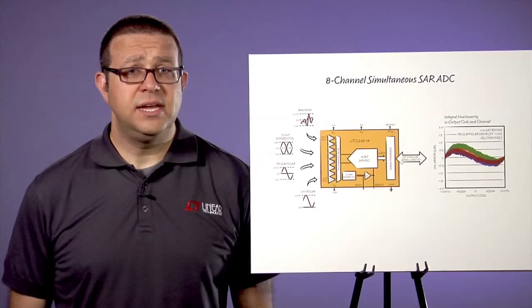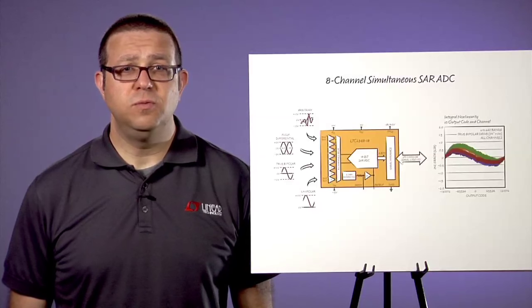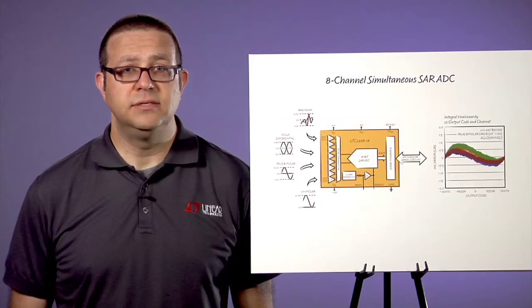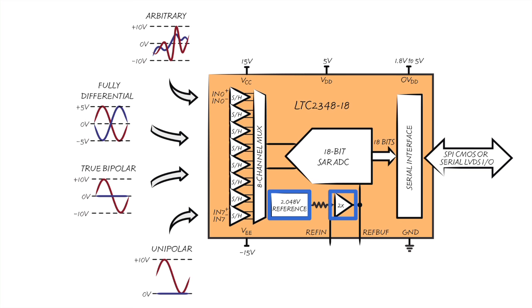Soft-span settings may be updated every conversion with no settling or throughput penalties. Using the internal reference and gain of two reference buffer, seven soft-span ranges are available, targeting the industry standard plus or minus 10 volt, plus or minus 5 volt, 0 to 10 volt, and 0 to 5 volt ranges. Other full-scale analog input ranges are also achievable using an external reference.